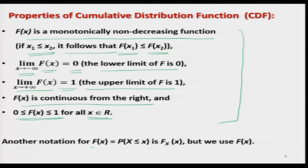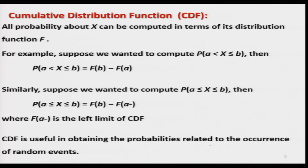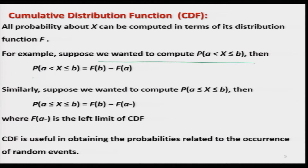Another representation of the CDF is writing F with the random variable in the subscript and the value in parenthesis, but we will use capital F(x) for simplicity. Now, what is the use of the CDF? All probabilities about X can be computed in terms of the CDF. Once you know the distribution function F(x), you can compute all sorts of probabilities. For example, the probability that X lies between small a and small b — with X greater than a and less than or equal to b — equals F(b) minus F(a).